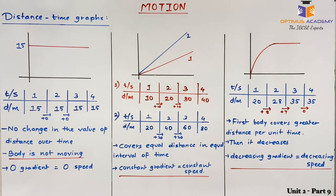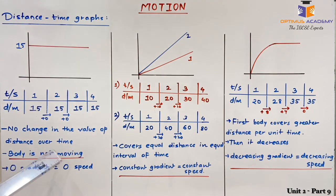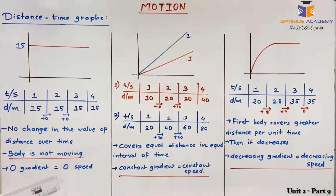We will try to understand what each type means. In the first example, the table shows values at 1-second intervals where the body is at 15 units of distance for every interval — first, second, third, and fourth. The body is not changing its distance, meaning it is not moving. As there is no change in distance over time, the speed is zero. Zero gradient means zero speed.